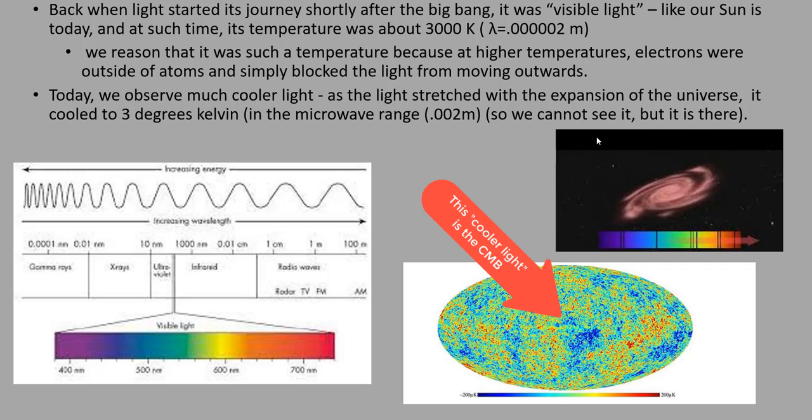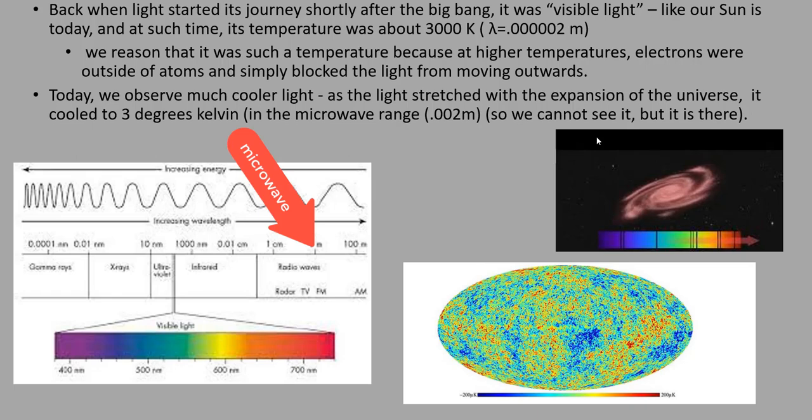Today we observe much cooler light. As the light stretched with the expansion of the universe, it cooled to about three degrees Kelvin, and this is in the microwave range of wavelengths of about 0.002 meters. We cannot see it, but we have sensors that can detect it.